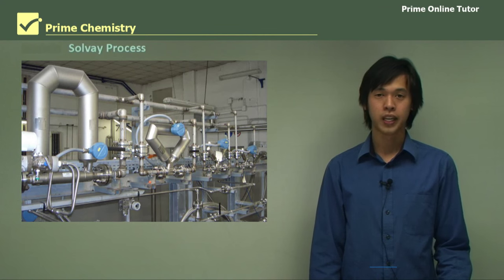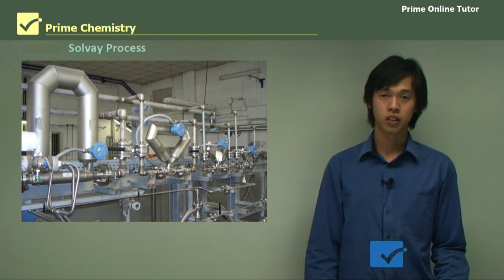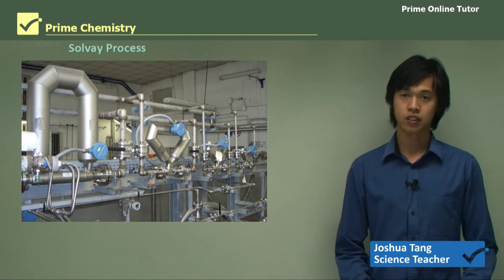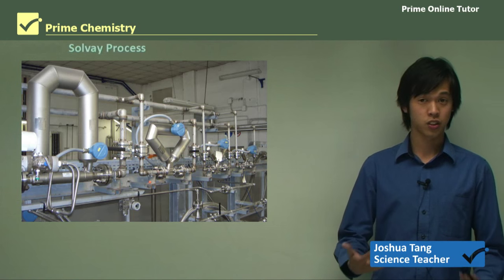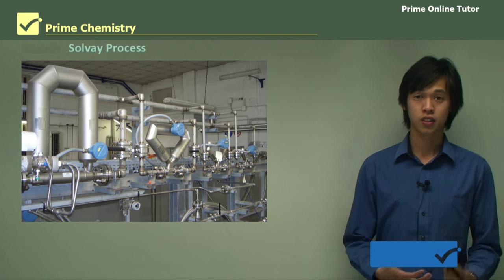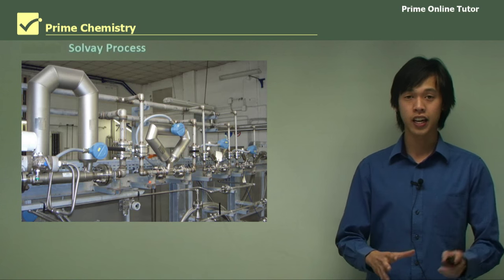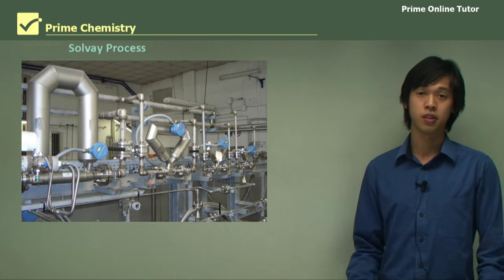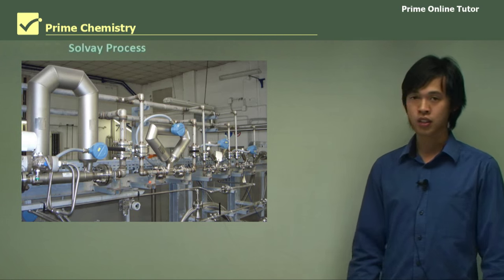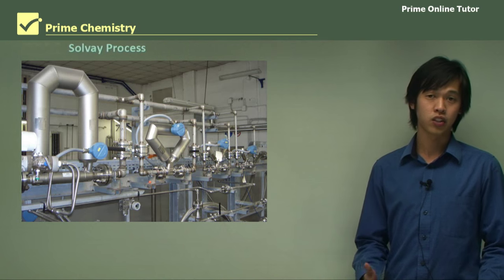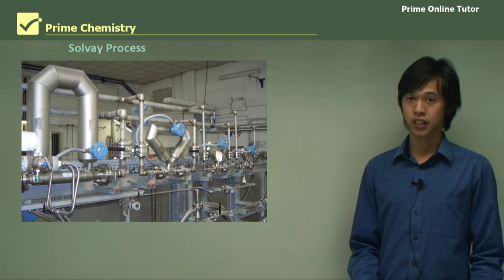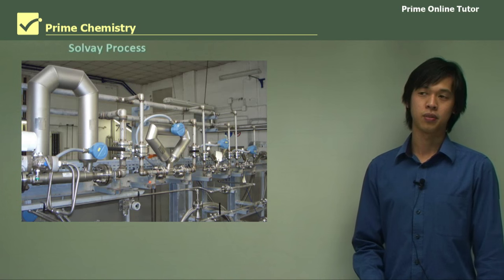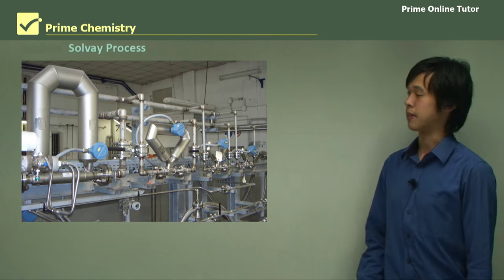Hello everyone and welcome again. In today's lesson we'll be studying industrial chemistry. In the previous lesson we looked at the uses of sodium carbonate, and today we'll be studying the Solvay process, which is what we do in industry to actually produce sodium carbonate. This is one of the major industrial manufacturing processes and it's the last process we'll study in industrial chemistry.